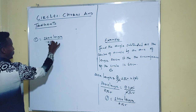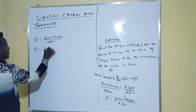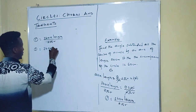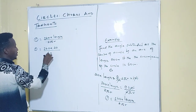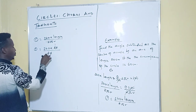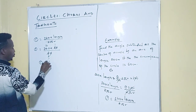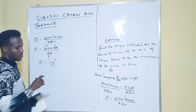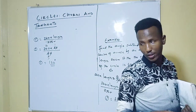So theta equals 360 times 20 divided by 60. Cancel 60 by 2 and 360 by 6: this gives 120. So the angle subtended by the arc at the center of the circle is 120 degrees.